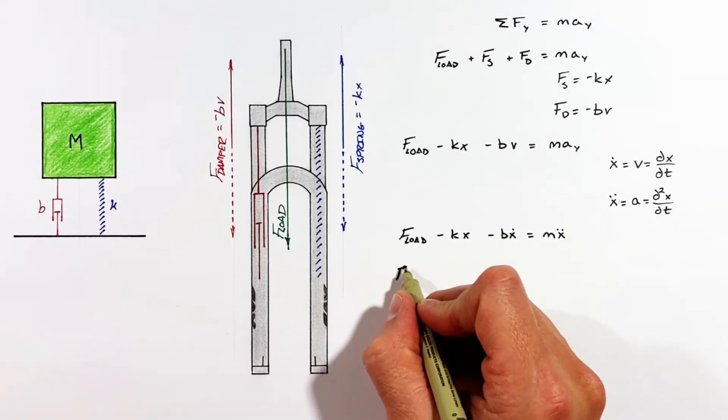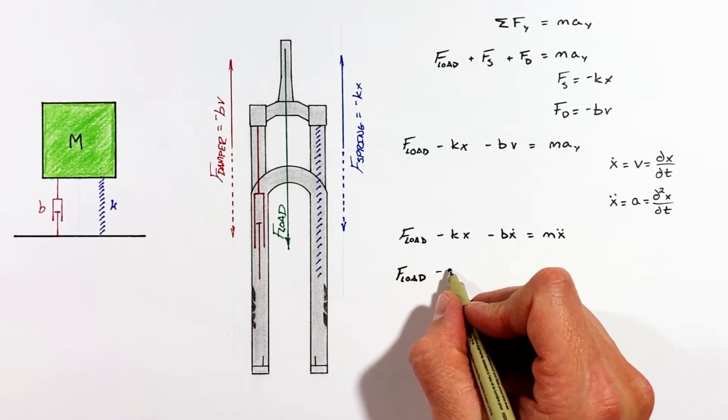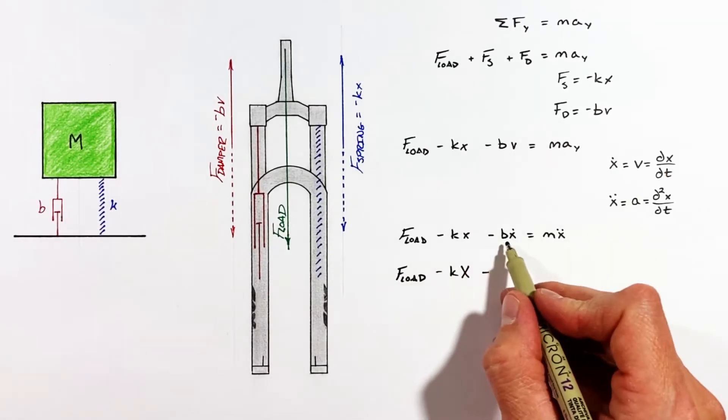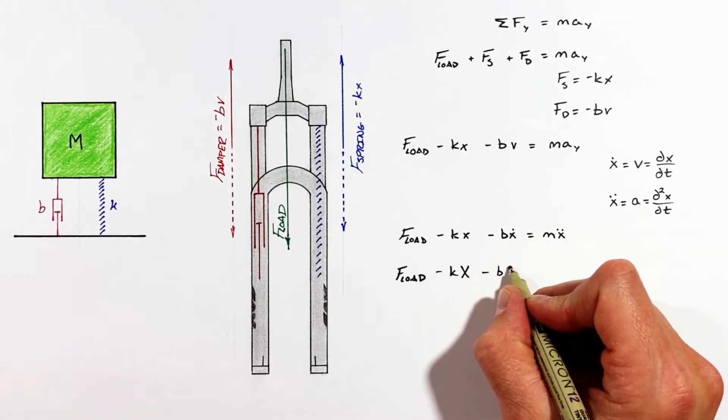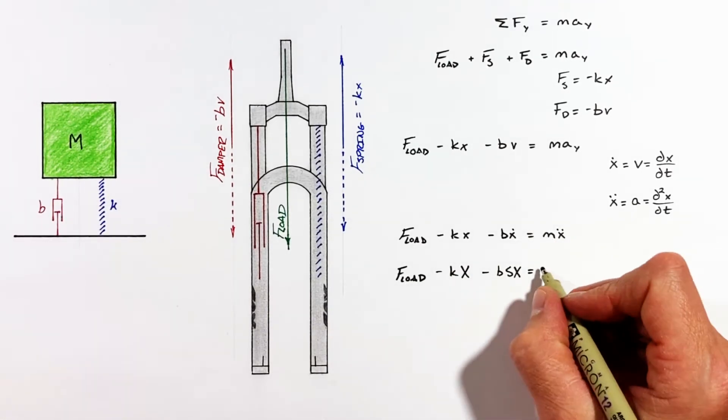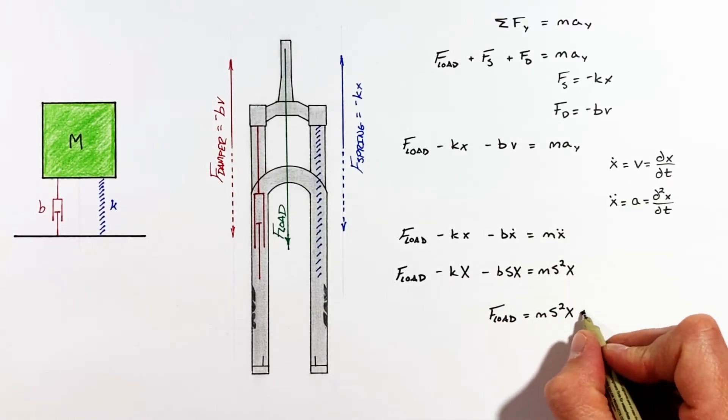Now applying the Laplace transform to our time-dependent variables, position becomes capital X, X dot becomes SX using what's called an operator variable, and X double dot becomes S squared X.